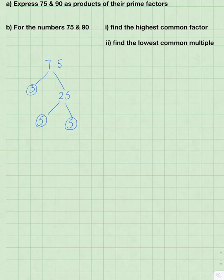For 90, the easiest prime factor to take out is 3, and 3 thirties are 90.